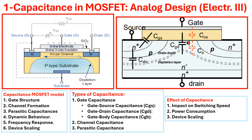Besides these two, other parasitic capacitors are also considered for MOSFET modeling. These include the gate-to-source capacitor (CGS), which represents the capacitance between the gate and source, affecting input characteristics. Another parasitic capacitor is the gate-to-drain capacitor (CGD), which can introduce feedback effects that impact switching behavior. Another parasitic capacitor is the gate-body capacitor (CGB), which influences the threshold voltage through the body effect.